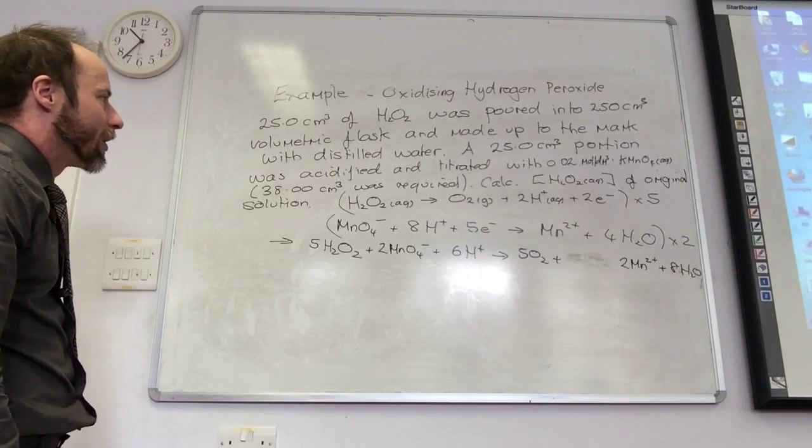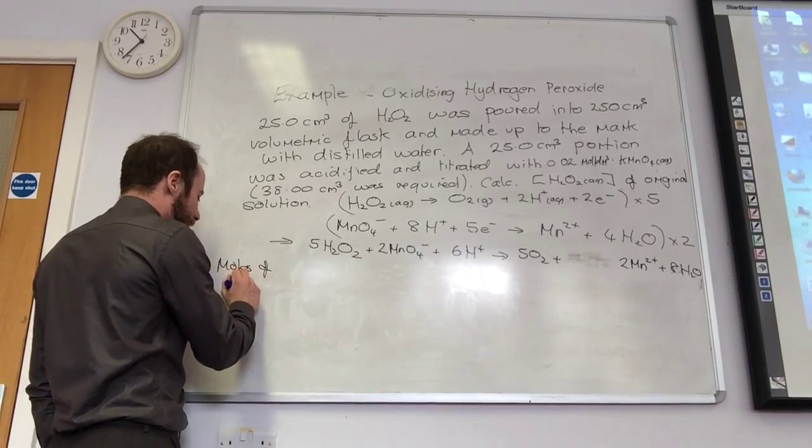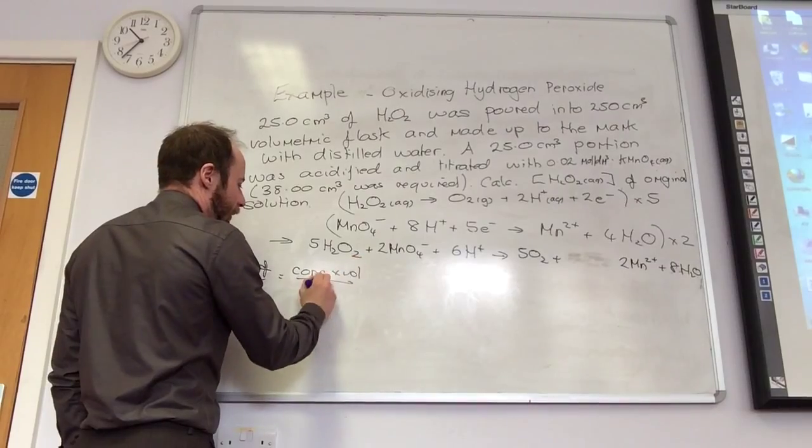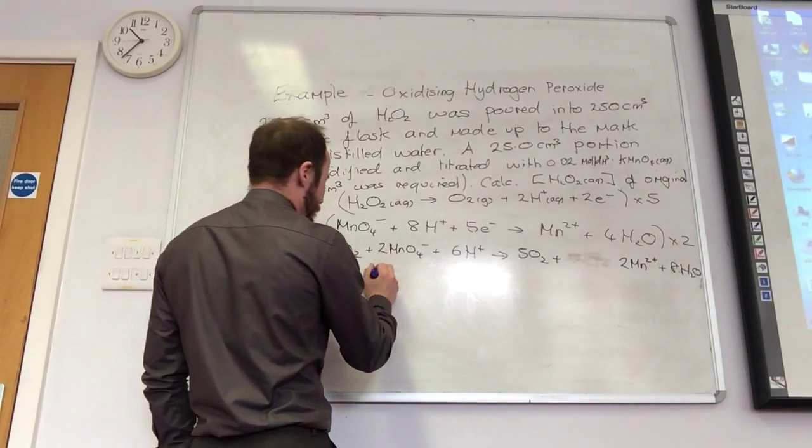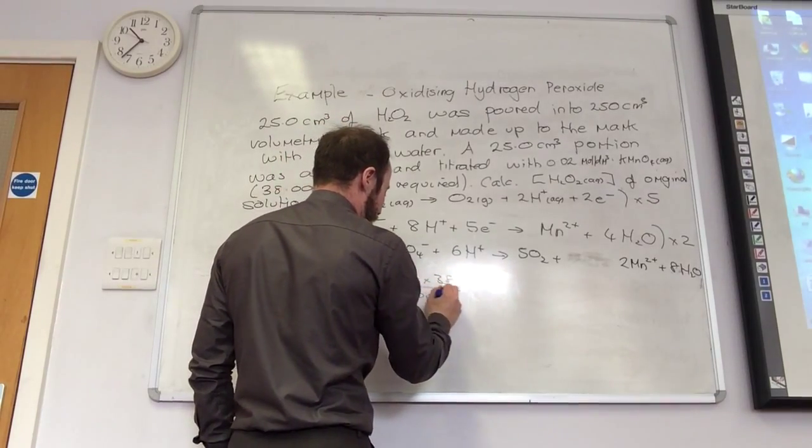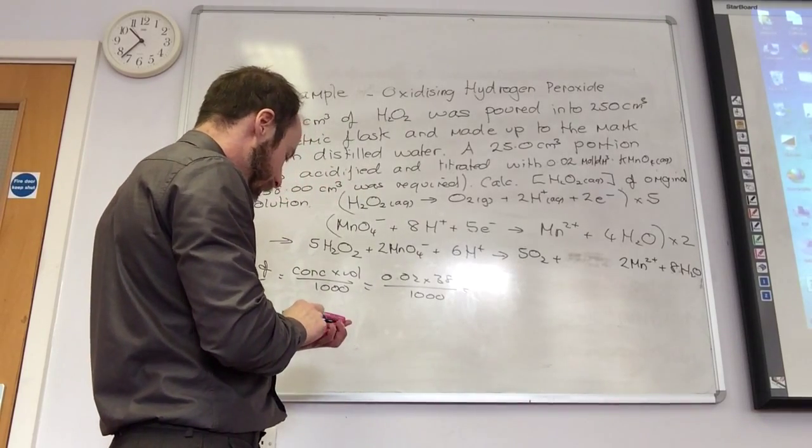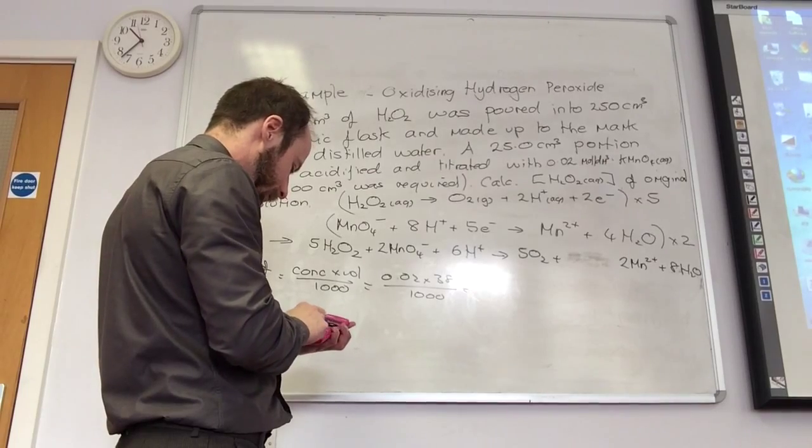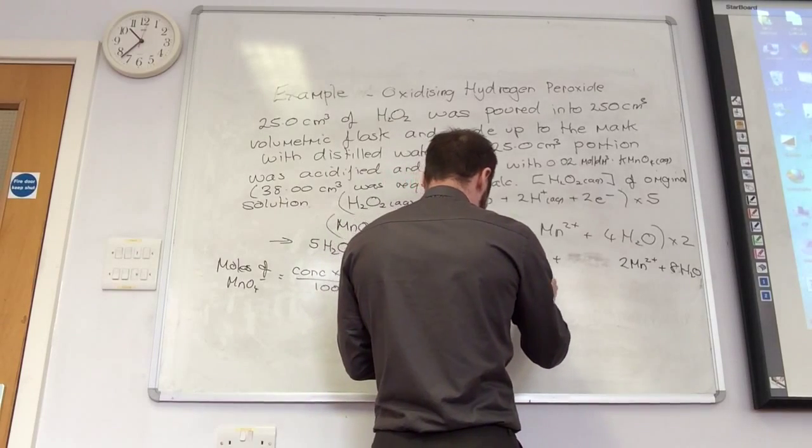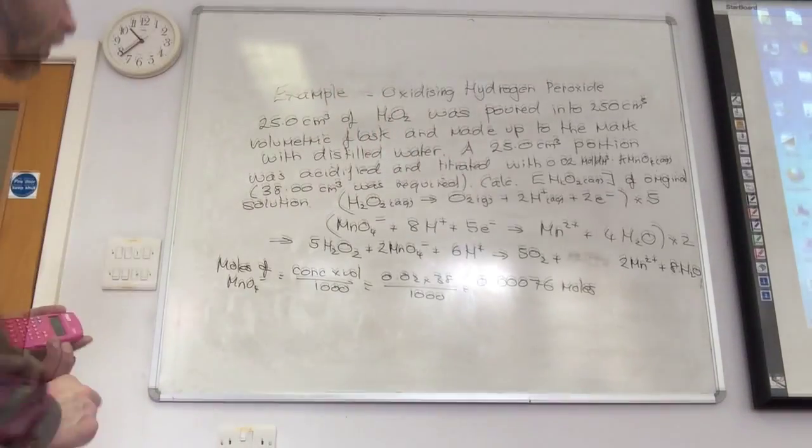First thing, what's the first thing I'm always going to do? Find the moles of MnO4 minus. Yeah, for real moles of MnO4 minus is my concentration times volume over 1000, 0.02 times 38 over 1000.